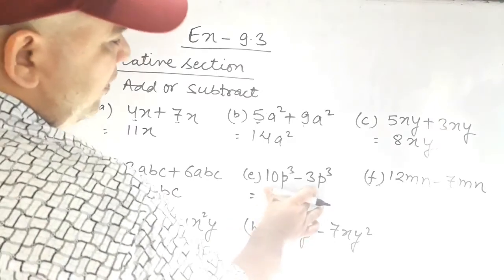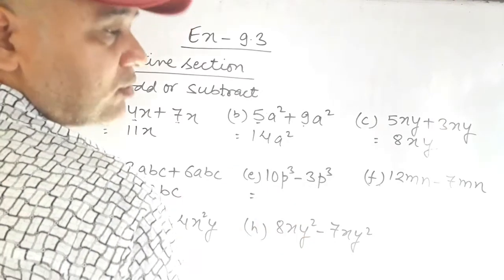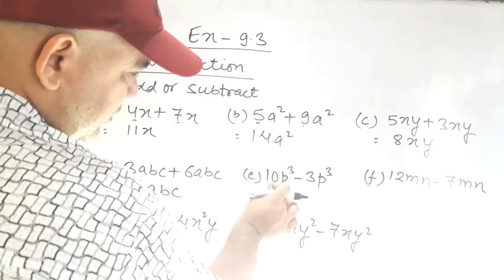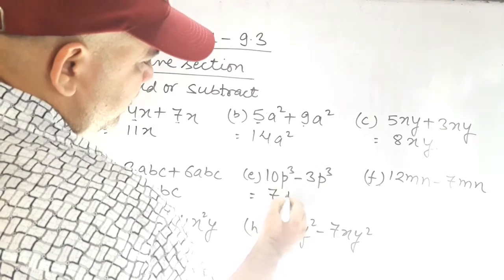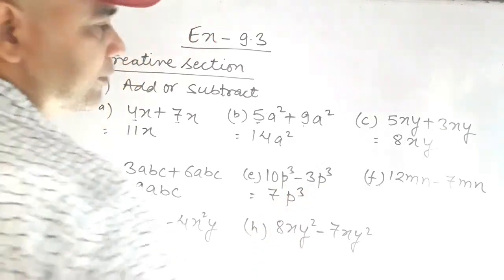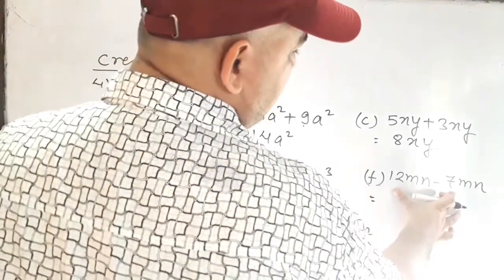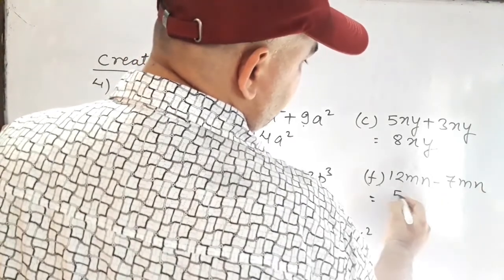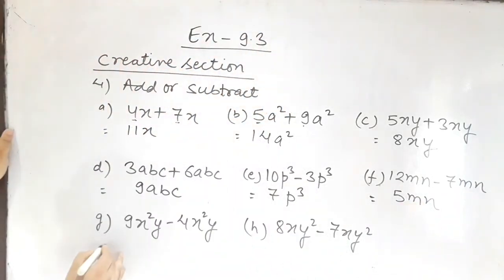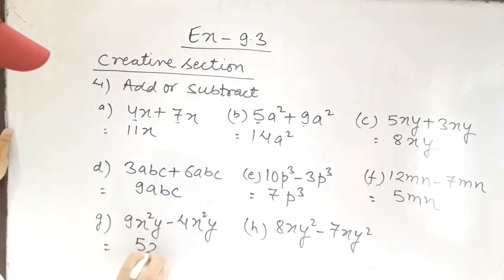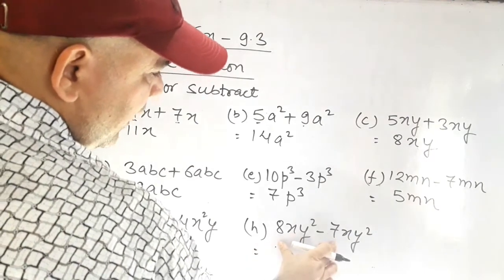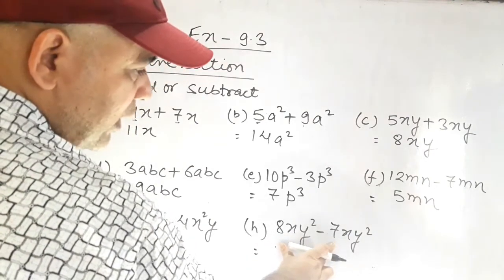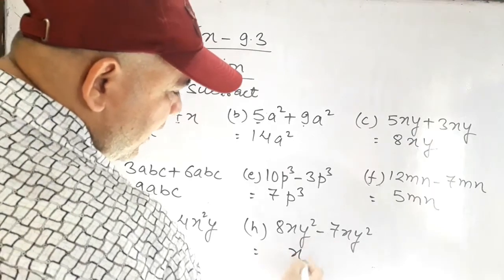Now we have to subtract. Since these two are like terms, they can be subtracted. Subtract the coefficients: 10 minus 3 equals 7p cubed. Next: 12 minus 7 equals 5m. Next: 9 minus 4 equals 5x squared y. And: 8 minus 7 equals 1xy squared, or simply xy squared.